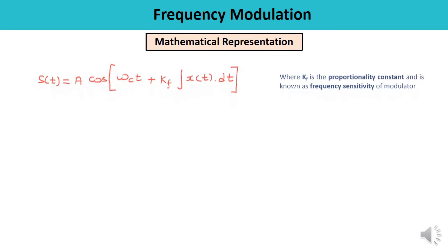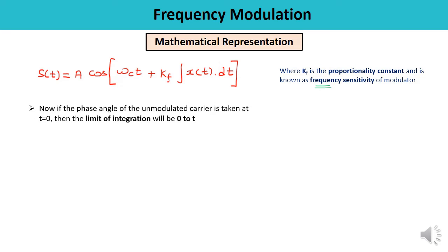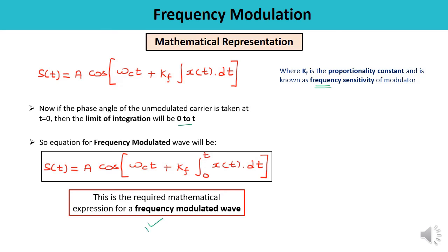If we take the phase angle of the unmodulated carrier at t = 0, the limit of integration will be from 0 to t. The general expression for the frequency modulated wave is therefore: s(t) = A cos(omega_c * t + kf * integral from 0 to t of x(t) dt). This is the required general expression for the frequency modulated wave.